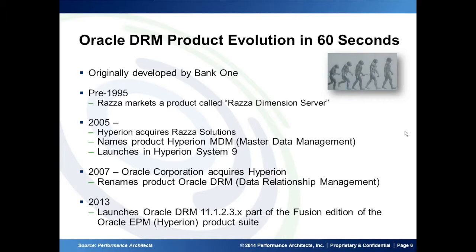In the spring of 2007, April I believe, Oracle acquired Hyperion and renamed the product to Oracle DRM — Data Relationship Management. As of the current date, 2013-2014, Oracle DRM 11.1.2.3.x is now part of the Fusion Edition of the Oracle EPM product suite.